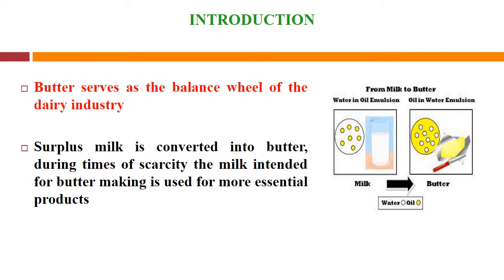In milk, the milk fat remains in emulsion form — that is a kind of oil-in-water emulsion. Whereas in butter, the major component is oil or fat; only around 20% maximum is water. So it is a water-in-oil emulsion. There is just a reversion from oil-in-water to water-in-oil.